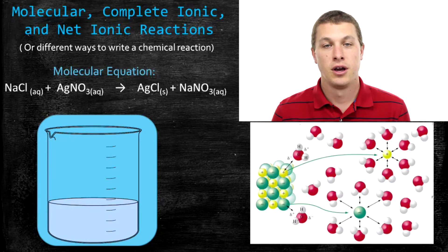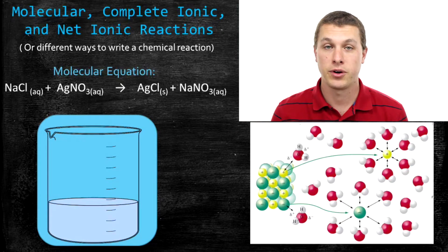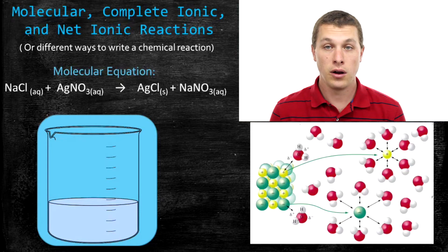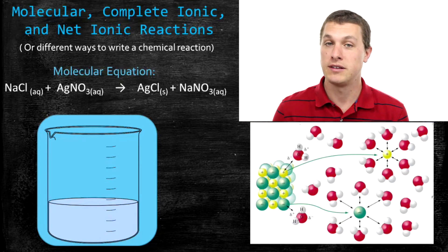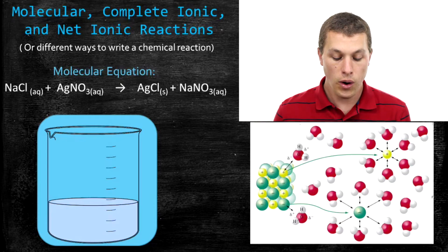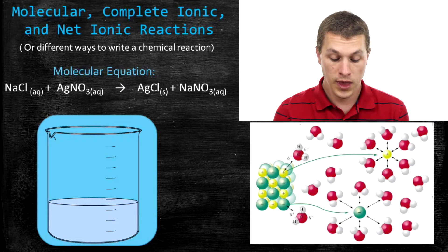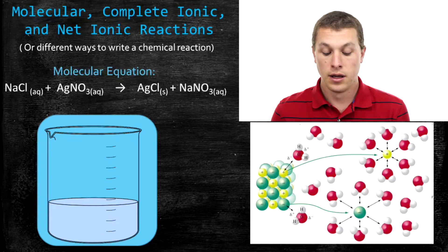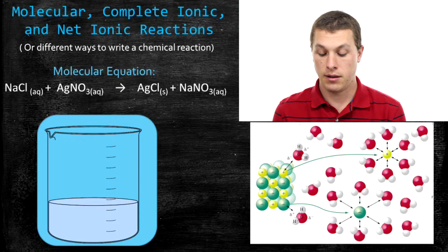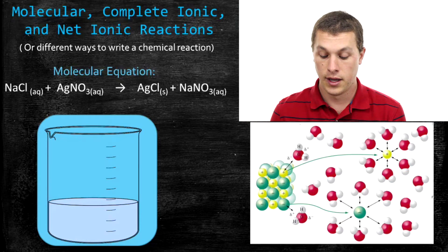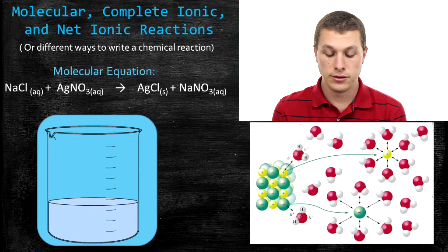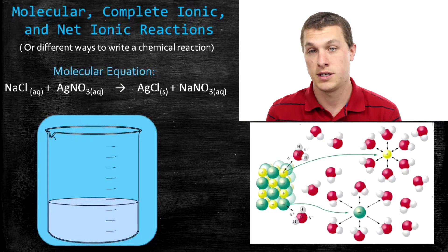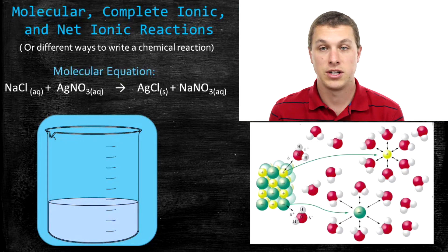In this episode of Real Chemistry, we're going to talk about a bunch of different ways to talk about a chemical reaction. We're going to start with a good old-fashioned molecular equation, which is the thing we're basically all familiar with. Below, I have the molecular equation written: sodium chloride plus silver nitrate goes to silver chloride and sodium nitrate. That equation tells you, in terms of the molecules you're mixing together, what changes happen.